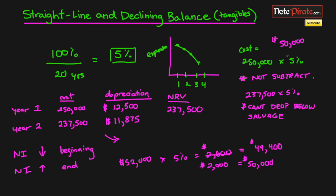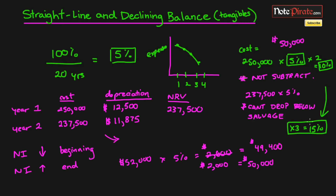You might also be familiar with the double declining balance method — it's simply the declining balance rate multiplied by two, so 5% × 2 = 10%. For the triple declining balance method, you multiply the rate by three: 5% × 3 = 15%. You'd use the triple declining balance if you're getting significantly more use out of the asset in the early years and want to depreciate it more heavily upfront.